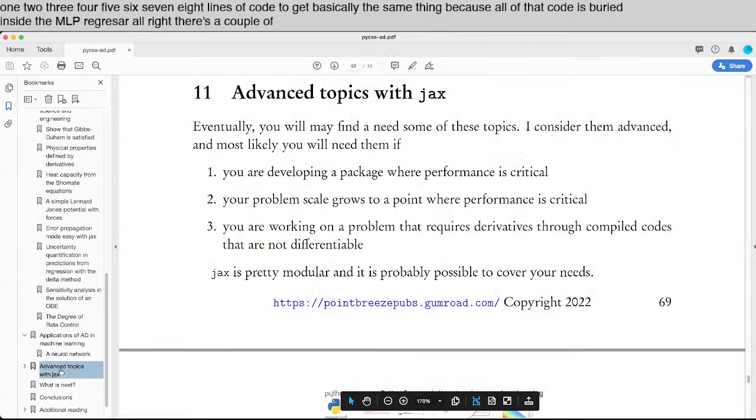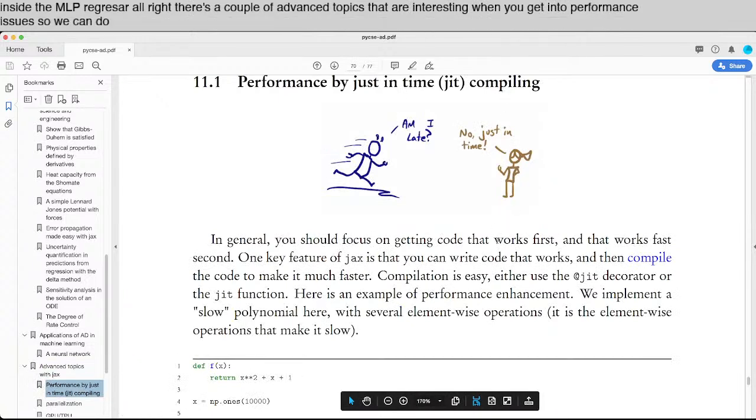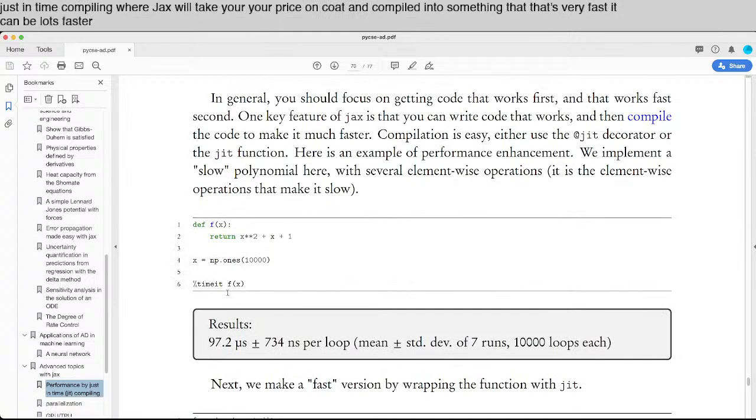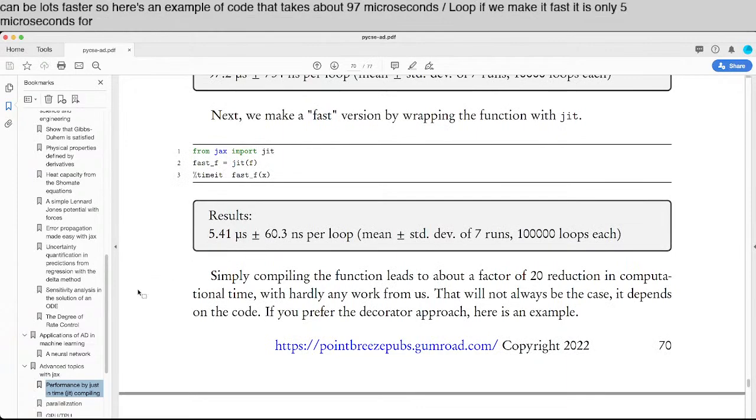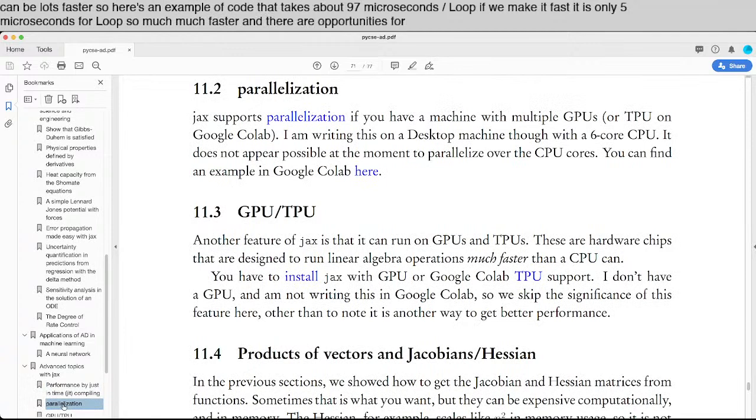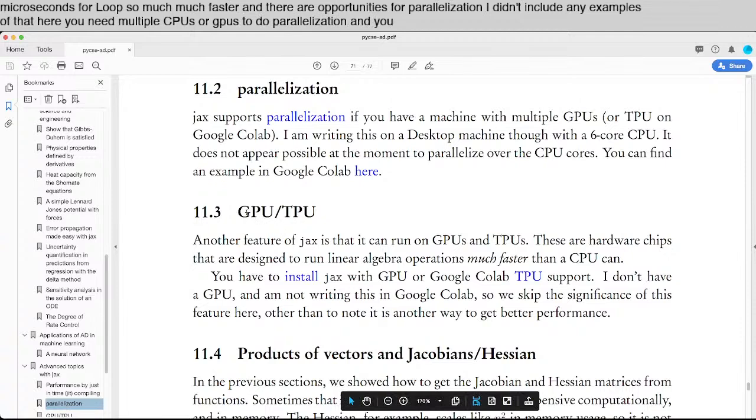All right. There's a couple of advanced topics that are interesting when you get into performance issues. So we can do just in time compiling where JAX will take your Python code and compile it to something that's very fast. It can be lots faster. So here's an example of code that takes about 97 microseconds per loop. If we make it fast, it is only five microseconds per loop. So much, much faster. And there are opportunities for parallelization. I didn't include any examples of that here. You need multiple CPUs or GPUs to do parallelization. And you can also run JAX on GPU or TPU if you have access to those.